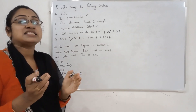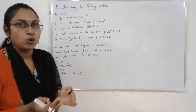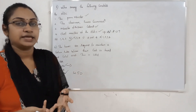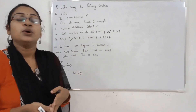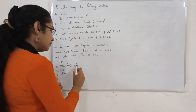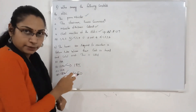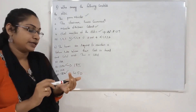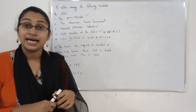The Statutory Liquidity Ratio — SLR — requires banks to maintain a certain ratio between their cash and total assets, including gold and government bonds. This is the rule of the RBI. SLR and CRR are key bank rates, along with Repo Rate and Reverse Repo Rate.